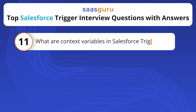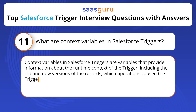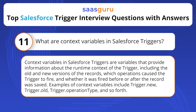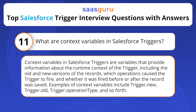What are context variables in Salesforce triggers? Context variables in Salesforce triggers are variables that provide information about the runtime context of the trigger, including the old and new versions of the records, which operations caused the trigger to fire, and whether it was fired before or after the record was saved. Examples of context variables include trigger.new, trigger.old, trigger.operationType, and so forth.